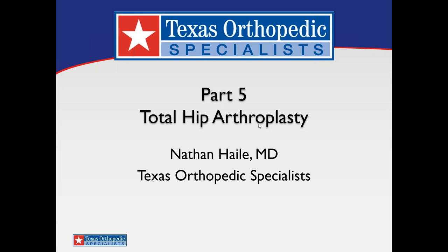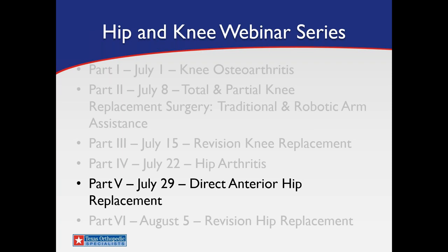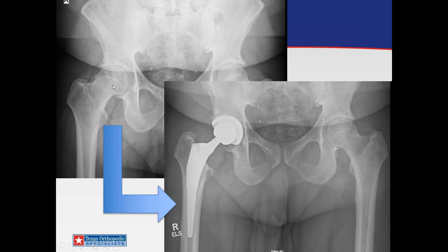Today is about total hip arthroplasty — this is part five of six. We've been through knee arthritis, knee replacement, and revision knee. Last week we did hip arthritis, and that leads right into today, which is the direct anterior hip. So how do we get from a hip with only mild arthritis to the right hip shown here, which has bone-on-bone arthritis, large osteophytes, and cystic change in both the acetabulum and the femur?